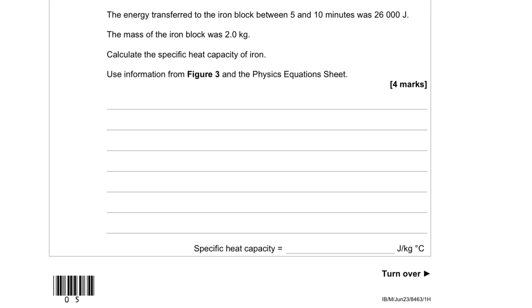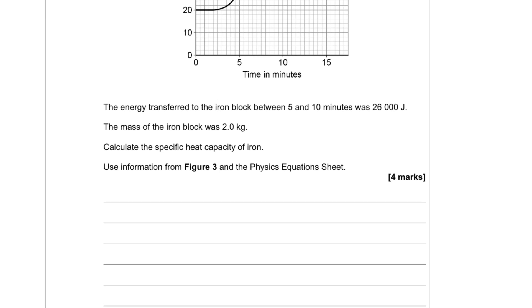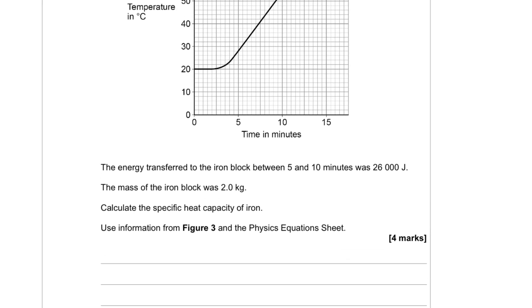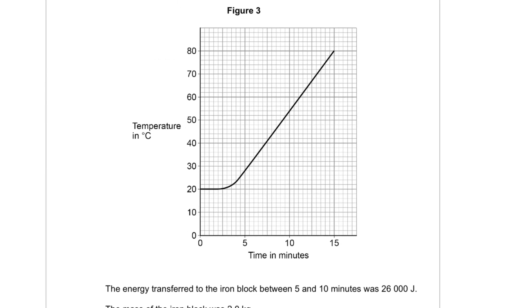Now to calculate the specific heat capacity of iron, we need to go back to the graph and obtain some value between 5 and 10 minutes. So here we are on the graph paper. So we look at 5 minutes. That's 5 minutes there. And we can work out the value, so that will be 28 degrees Celsius. And for 10 minutes, that will be 54. So that's 54 degrees Celsius.